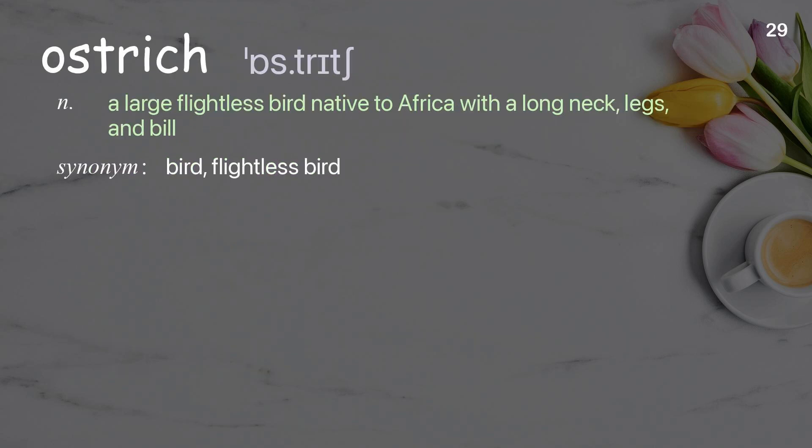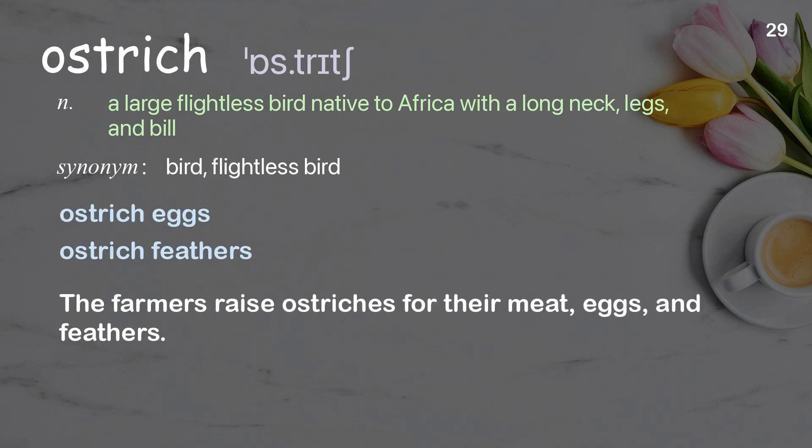Ostrich: A large flightless bird native to Africa with a long neck, legs, and bill. Examples: Ostrich eggs. Ostrich feathers. The farmers raise ostriches for their meat, eggs, and feathers.